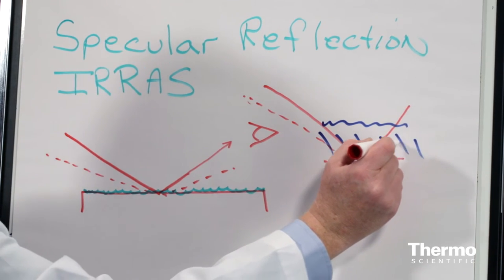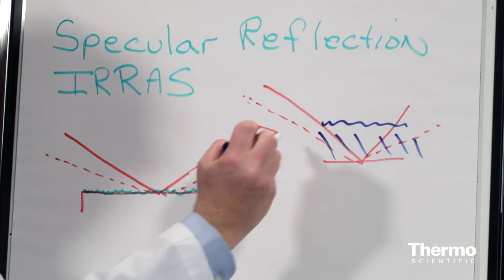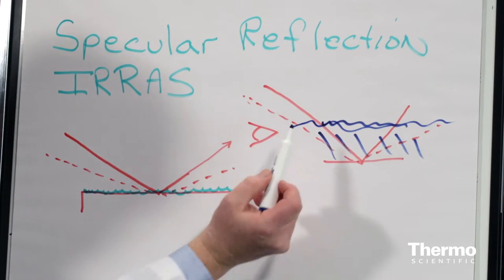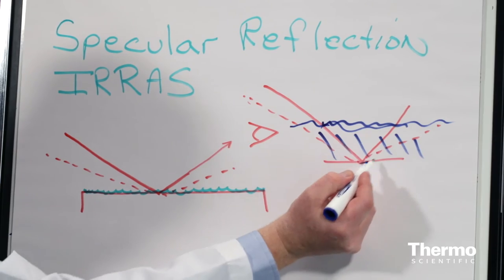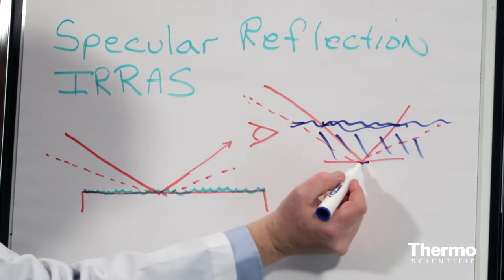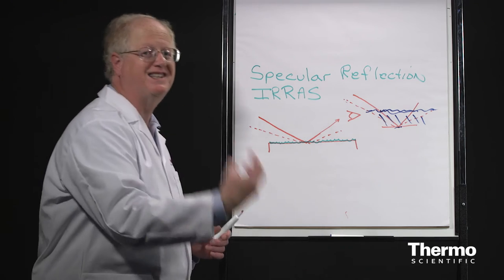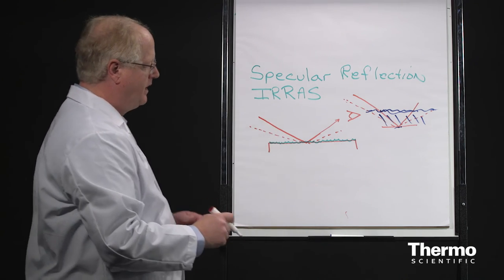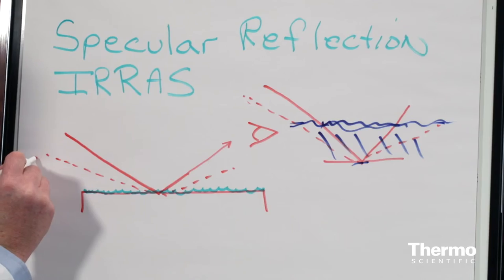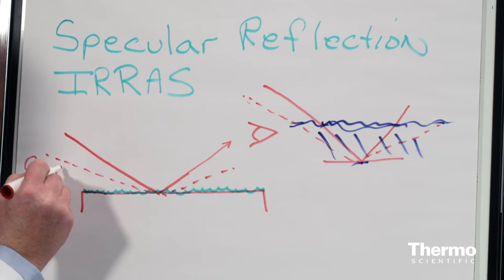So in the first case, we pass through that much of the sample. In the second case, we pass through that much. So you're passing through more of the sample. You get better sensitivity for thin films. So if you have a really thin film, you want to come in at a grazing angle.